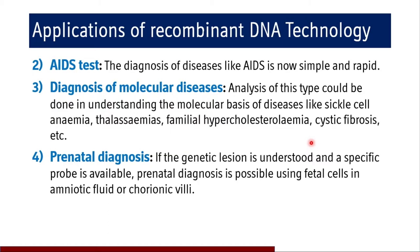Recombinant DNA technology plays a specific role in prenatal diagnosis. If a genetic lesion is understood prior to birth and a specific probe is available, prenatal diagnosis is possible using fetal cells in amniotic fluid or chorionic villi. Furthermore, fetal DNA circulating in maternal blood can also be investigated for any prenatal condition that could lead to a disastrous lifespan for the baby.